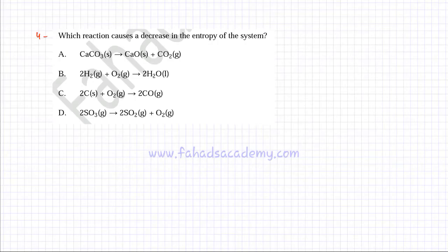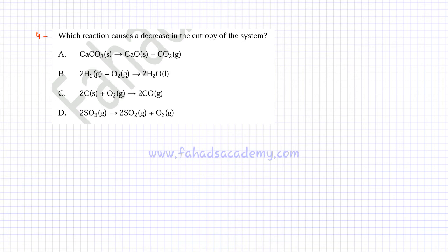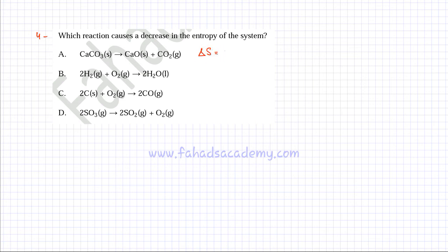We'll do this fourth past paper example now. The question asks which reaction causes a decrease in entropy of the system. In the first reaction, a solid reactant breaks down and decomposes, producing a gas. Since gases have higher disorder, disorder is increasing, so delta S would be positive in the first option.